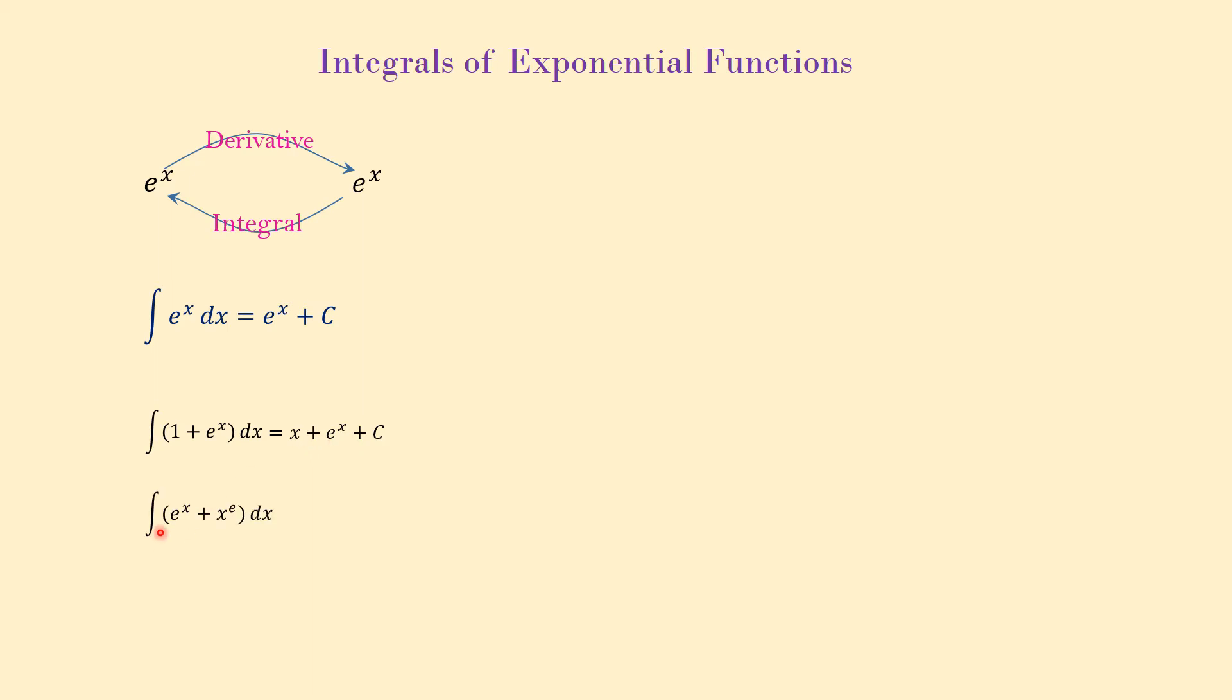Another example: integral of e to the x plus x to the e dx. Here note that e to the x is an exponential function because the power is a variable. But x to the e is not an exponential function. The power is a constant. And we know that when we want to integrate x to any number, and e is a number, e is approximately 2.7.